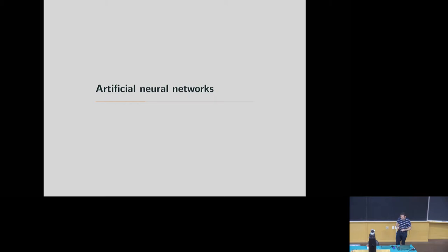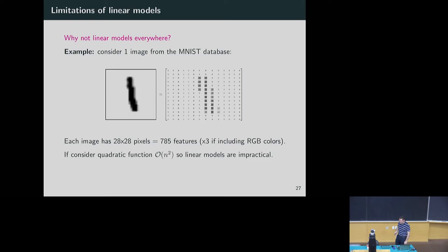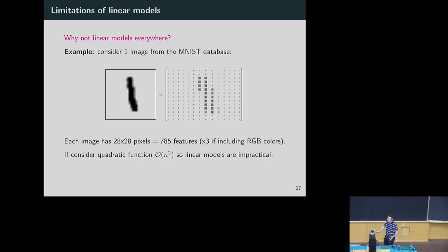Let's quickly go through artificial neural networks — why they are considered one of the best architectures for these applications. Why nonlinear models everywhere? If you take a picture like an image — for example, a handwritten number from the MNIST dataset — the matrix representation is very large: 28 by 28 pixels, giving 785 features. If the picture has colors, you multiply by three channels. If you think about solving this using a quadratic function, it takes forever and requires a lot of memory. You cannot use linear models for pictures — the solution is to try nonlinear models.